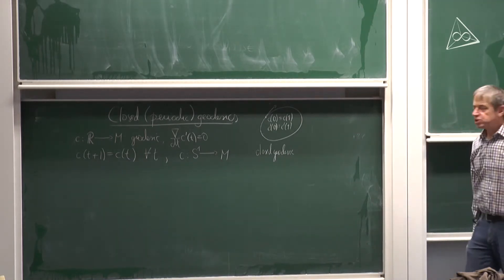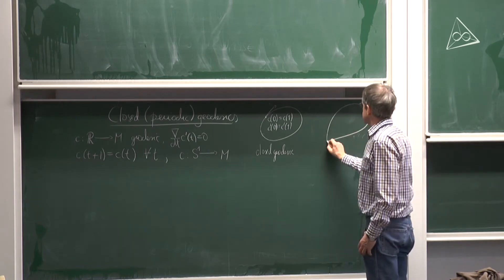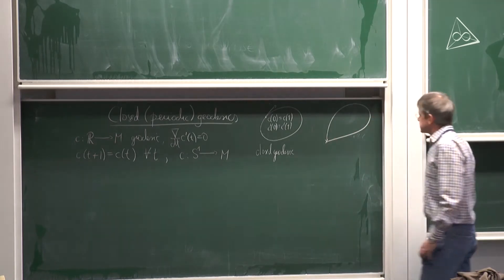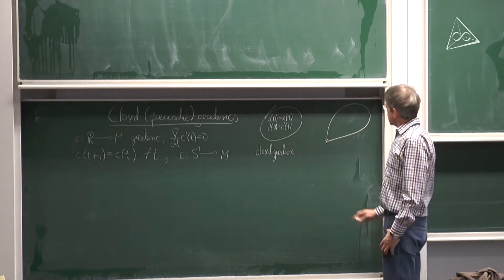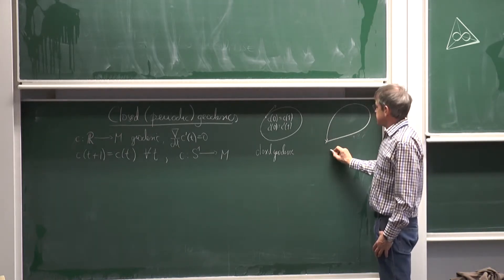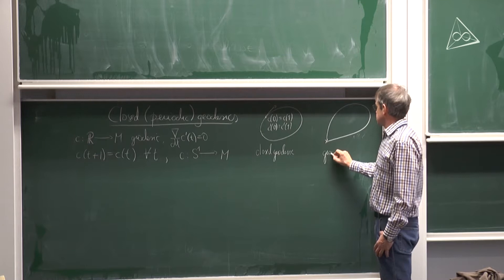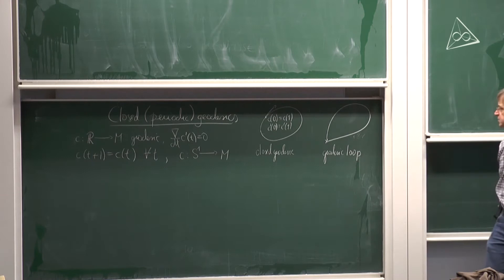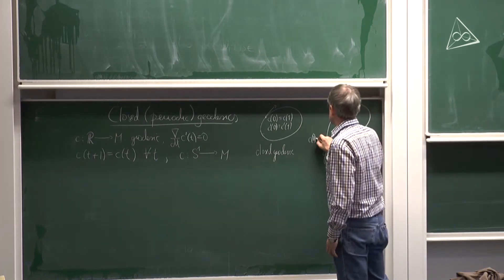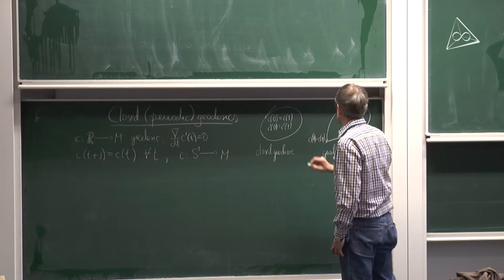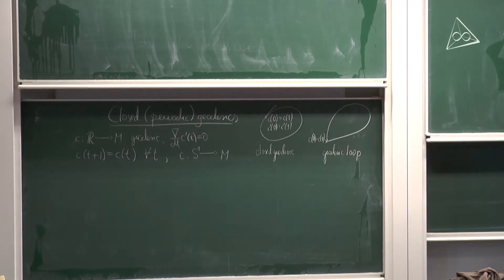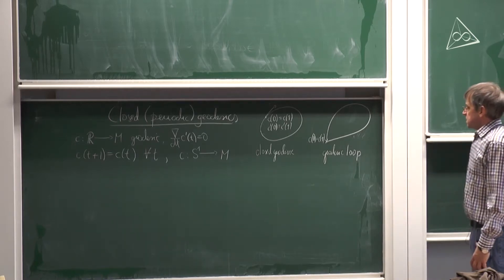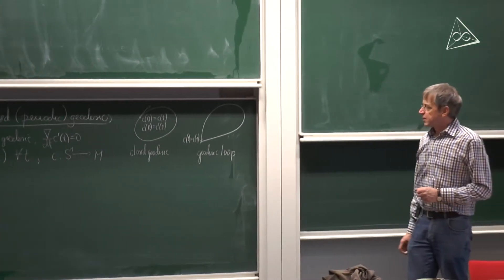There is also the notion of a geodesic loop. That's a curve which is closed but not periodic in the strict sense. The geodesic comes back to its initial point, but in general with a different velocity at this point. We are looking for geodesics which are periodic.